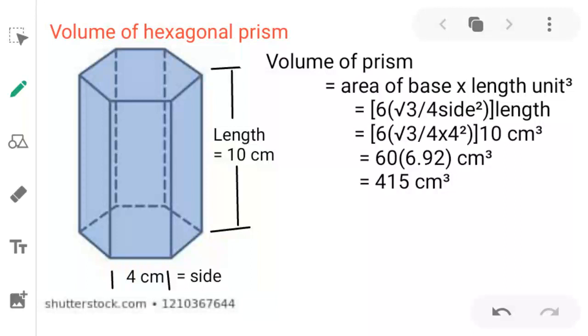A hexagonal prism, as shown in the diagram, has two top and bottom faces in the shape of a hexagon, and the distance between two faces is called the length of the prism.